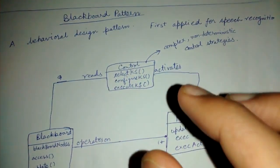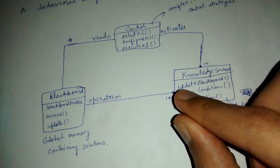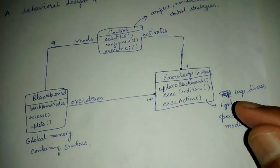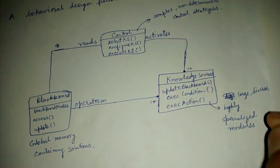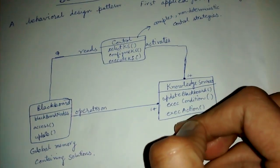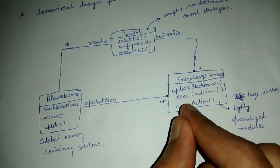It has three parts as you can see. One is knowledge sources - these are large and diverse highly specialized modules. These basically define some conditions and some actions to be taken on basis of that.